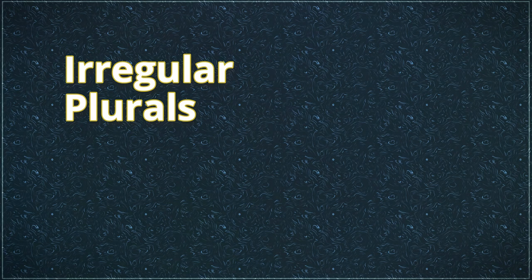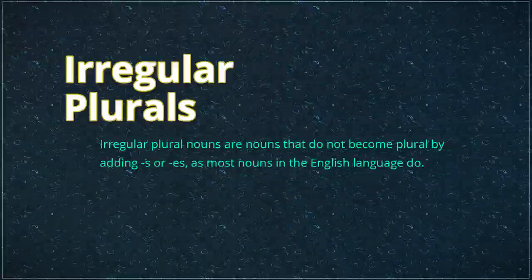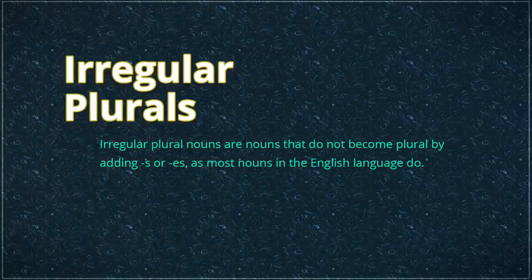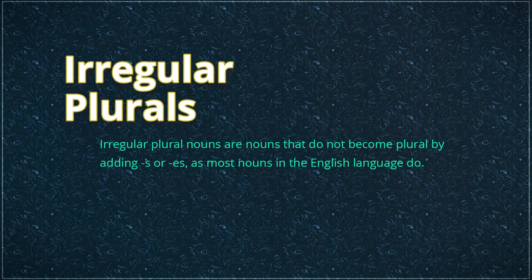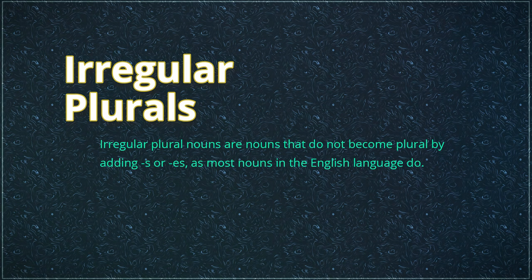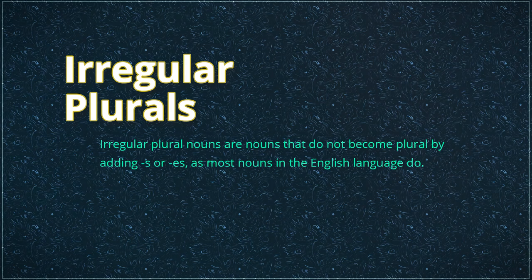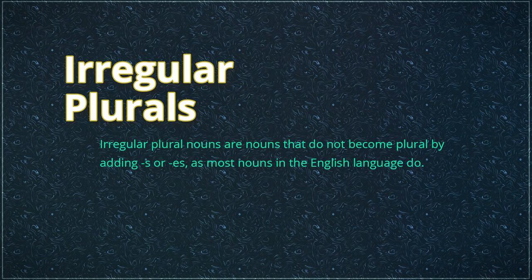What are irregular plurals? Irregular plural nouns are nouns that do not become plural by adding s or es, as most nouns in the English language do. Let's see a few examples.